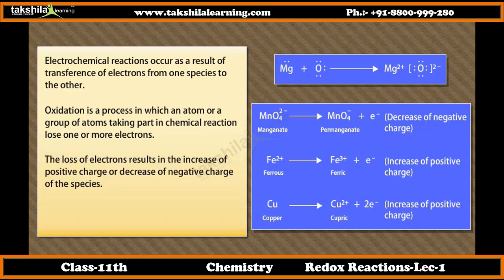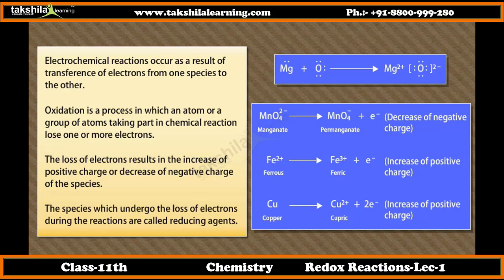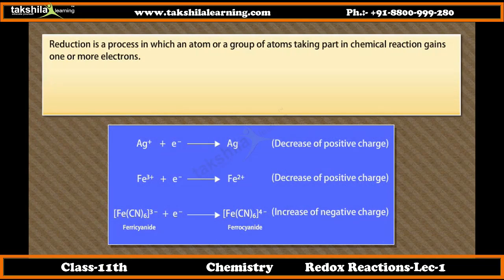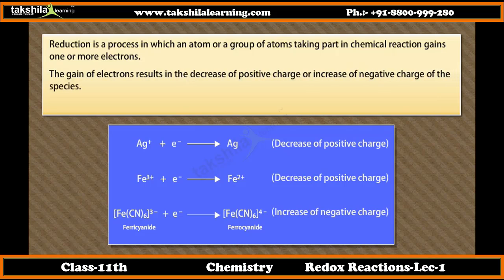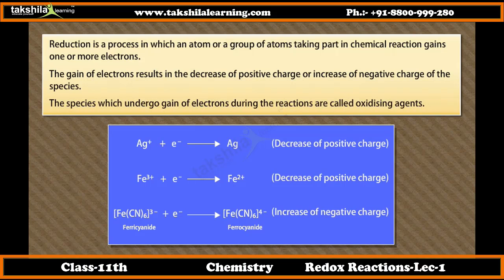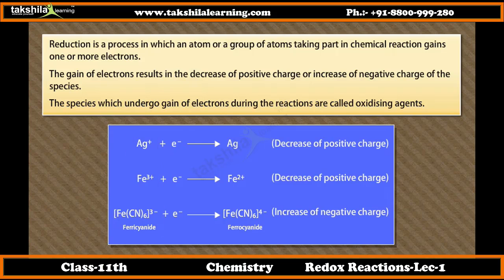The loss of electrons results in the increase of positive charge or decrease of negative charge of the species. The species which undergo the loss of electrons during reactions are called reducing agents. MnO4 2-, Fe2+, and CO2 are reducing agents in these examples. Reduction is a process in which an atom or a group of atoms gains one or more electrons. The gain of electrons results in the decrease of positive charge or increase of negative charge. The species which undergo gain of electrons are called oxidizing agents. Ag+, Fe3+, and Fe(CN)6 3- are oxidizing agents in these examples.